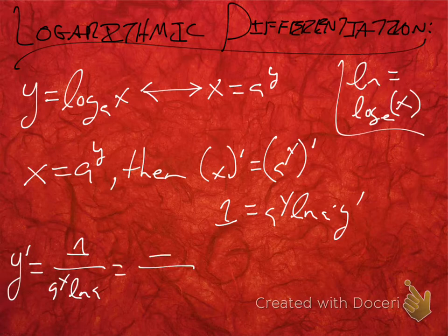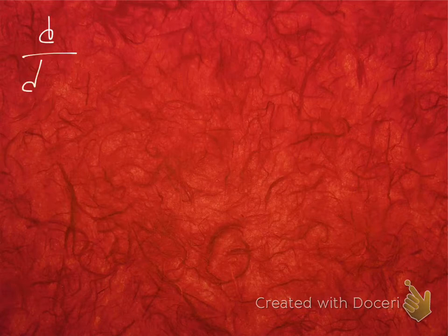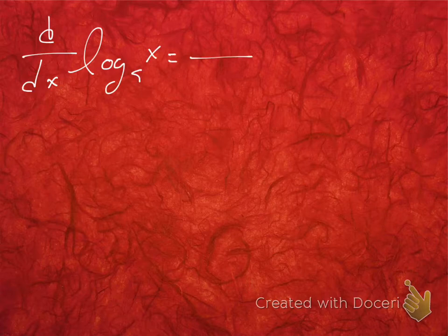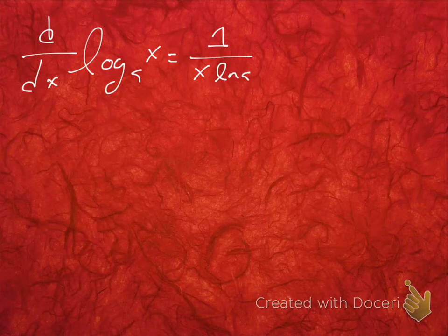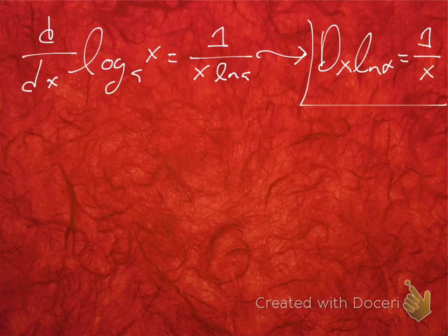Or we can say that y prime equals 1 over x times ln a, since a to the y equals x. By this logic, d/dx of log base a of x equals 1 over x ln a. And so the derivative of ln x is just equal to 1 over x, which is going to be crazy useful for us, because the natural log of e is just 1.